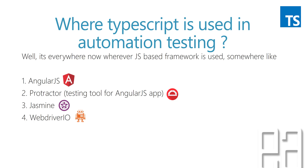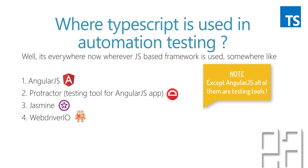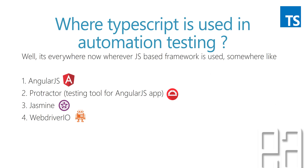Coming back to the earlier question — where is TypeScript used in automation testing? It is everywhere right now. Wherever JavaScript-based frameworks are used, TypeScript is also used — frameworks like AngularJS, Protractor, Jasmine, and WebDriverIO, plus hundreds more frameworks that can use TypeScript as their primary writing language. The AngularJS team started using TypeScript because they found it very helpful for developing AngularJS itself. Protractor, the automation testing tool for AngularJS applications, also uses TypeScript.